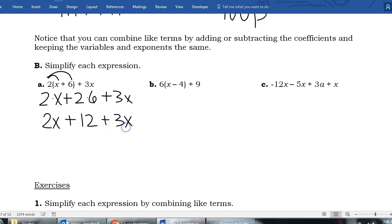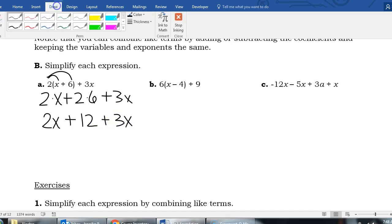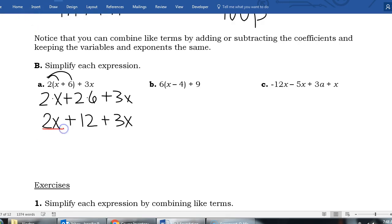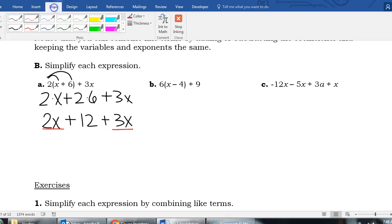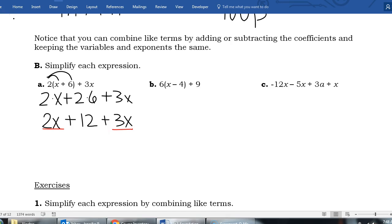And I'm going to still copy down my 3x. Now I have some like terms. I have 2x here and I have 3x here. Those are like terms. And the 12 is a constant. I have no other constant. So that's going to stay by itself. But if you put our 2x and our 3x together, we get 5x and 12 stays 12.